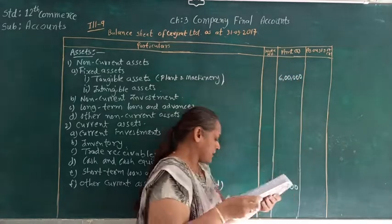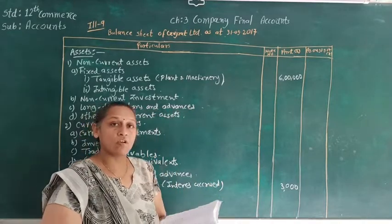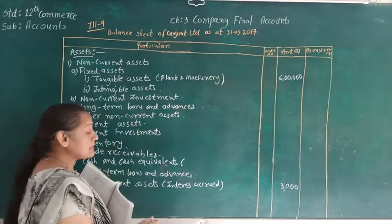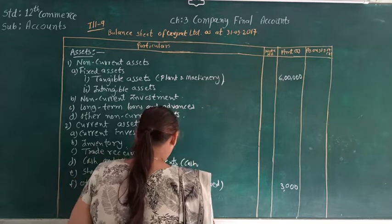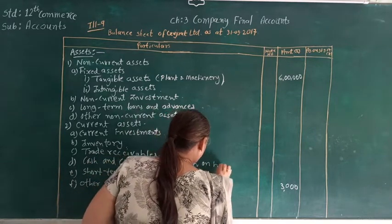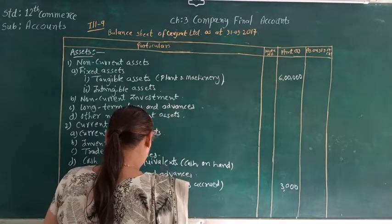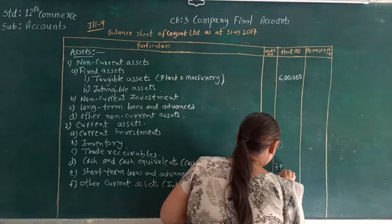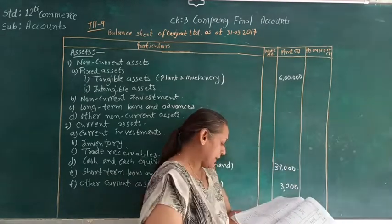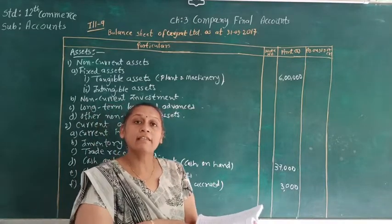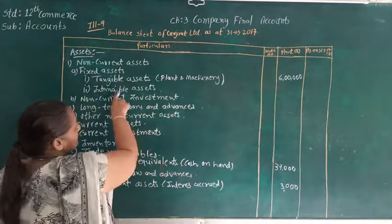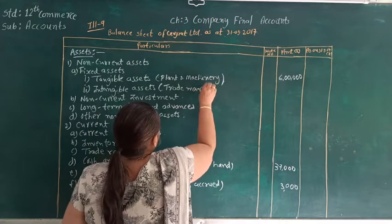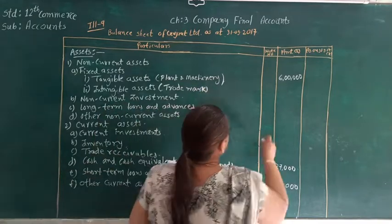After plant and machinery, the other asset given to us is cash on hand. As we know, cash on hand is cash and cash equivalent, and we are going to write it under the head cash and cash equivalent — cash on hand — and it is 37,000. After cash on hand, the other asset given to us is trade mark. As we know, trade mark is an intangible asset, so here we will write trade mark, and that will be 20,000.